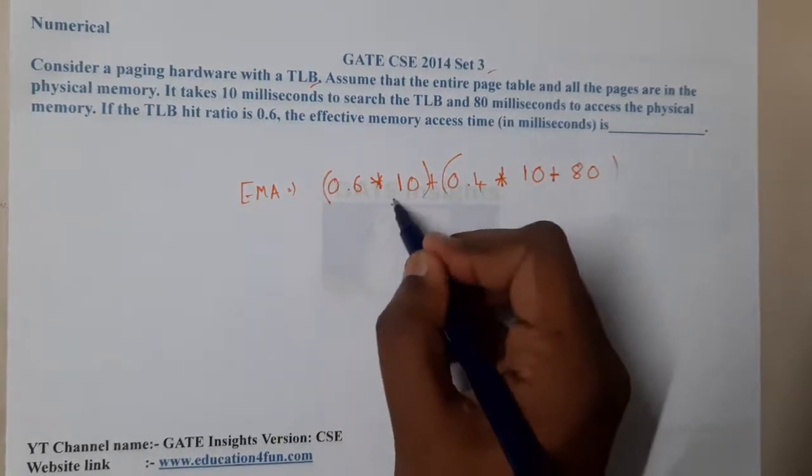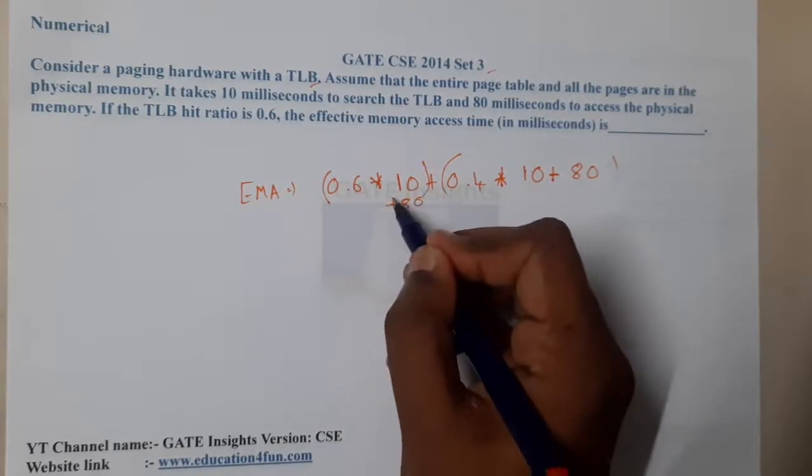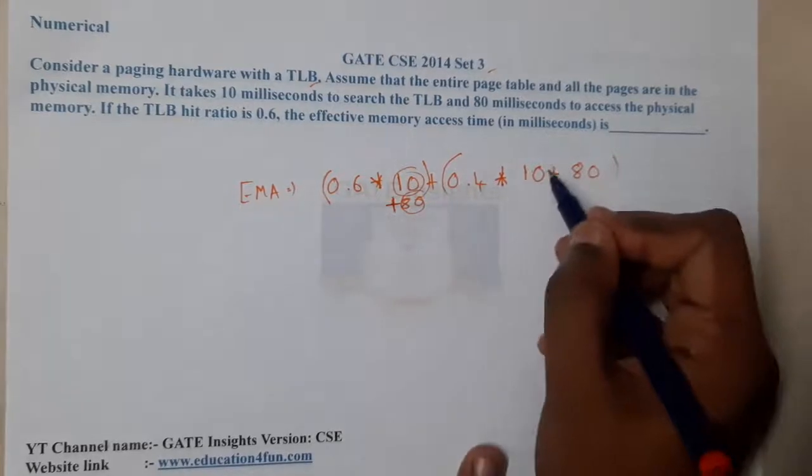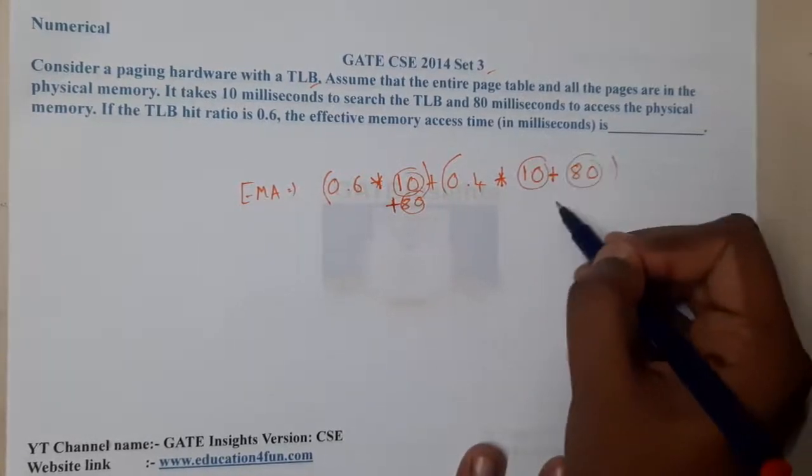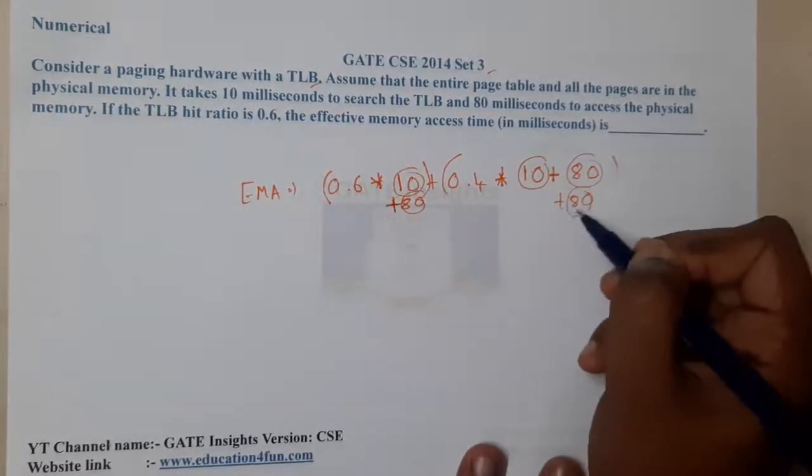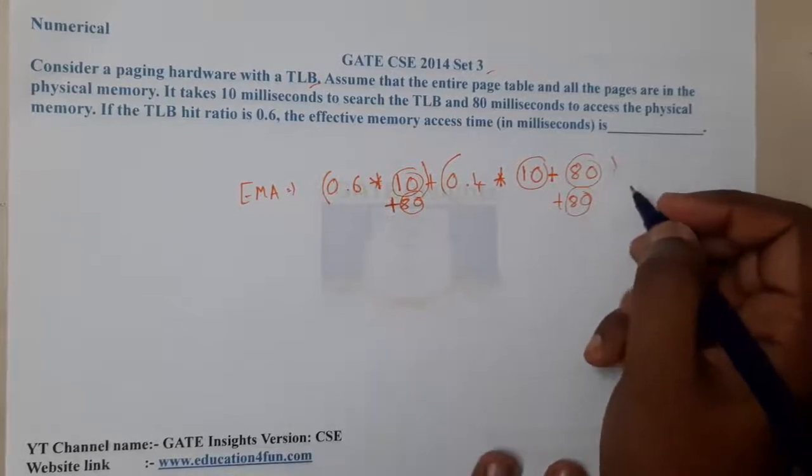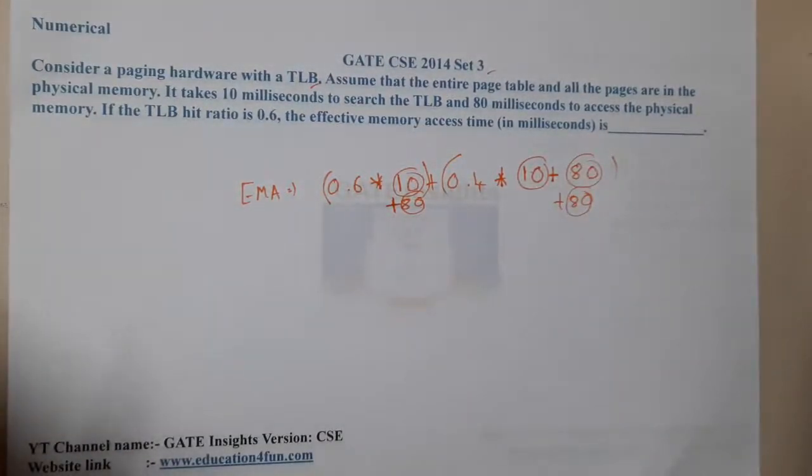Here also we need to add 80 because the memory access will be taking place. So this is for TLB and this is for memory, this is for TLB, this is for memory, and this is for miss. In total, this much amount of time will be spent.